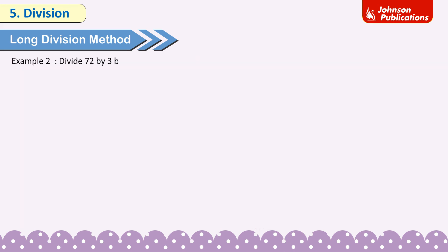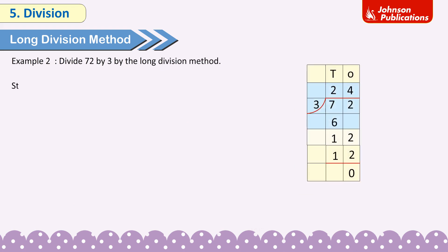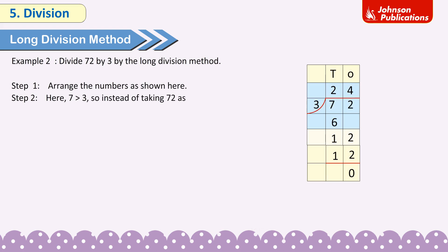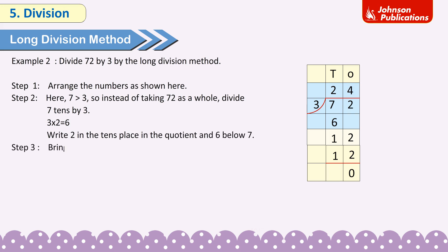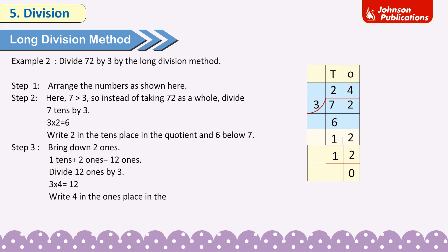Example 2: Divide 72 by 3 using the long division method. Step 1: Arrange the numbers. Step 2: Since 7 is greater than 3, divide 7 tens by 3. 3 × 2 = 6. Write 2 in the tens place in the quotient and 6 below 7. Step 3: Bring down 2 ones. 1 ten plus 2 ones equals 12 ones. Divide 12 ones by 3. 3 × 4 = 12. Write 4 in the ones place in the quotient and 12 below 12. 12 ones minus 12 ones equals 0.